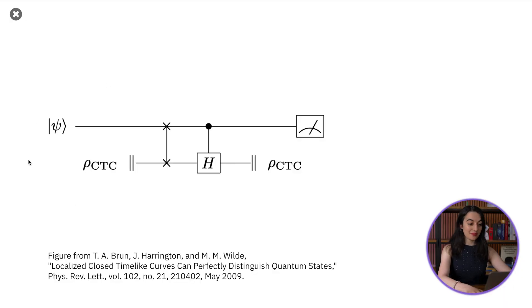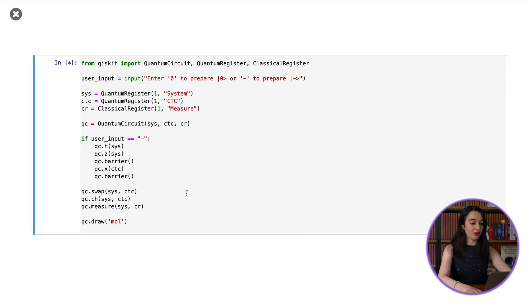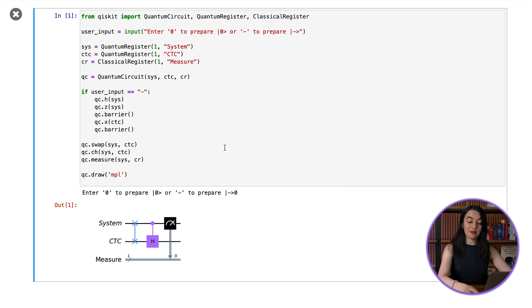So let's start coding. Here is the quantum circuit we need to create. Here we have a system qubit, which can be in the |0⟩ or |-⟩ state. Then we have our time loop qubit, which must be in the same state at the beginning and end of the circuit. The swap and controlled hadamard are needed for the circuit to be able to distinguish the |0⟩ and |-⟩ states. So in my code, I'll first ask the user for the input of zero to prepare the |0⟩ state and minus to prepare the |-⟩ state. If the user inputs zero, then my code leaves the system qubit as a zero and the time loop qubit as a zero, which is the state needed to make the time loop qubit's input and output states the same according to the consistency condition.